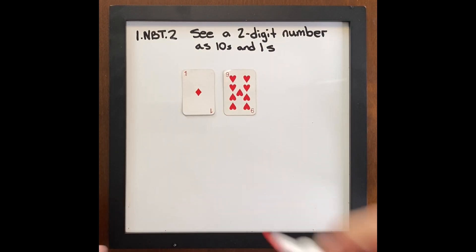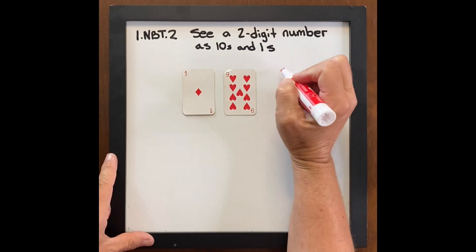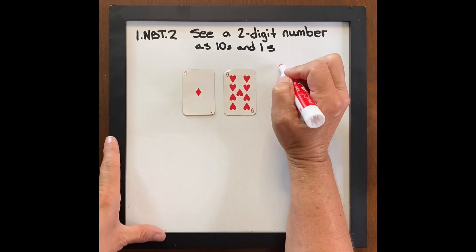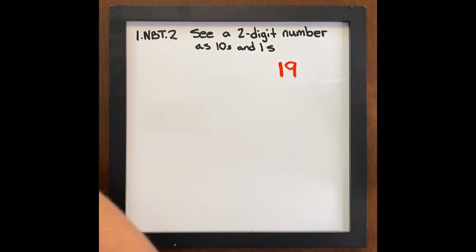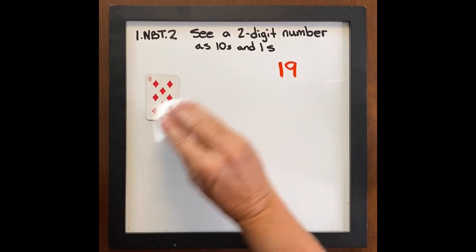Write that. And as I'm writing it, I want them and myself to say the numbers as tens and ones. One ten nine. This could be a very quick everyone or a small group. Get out your whiteboards. Write this number. Let's say it.